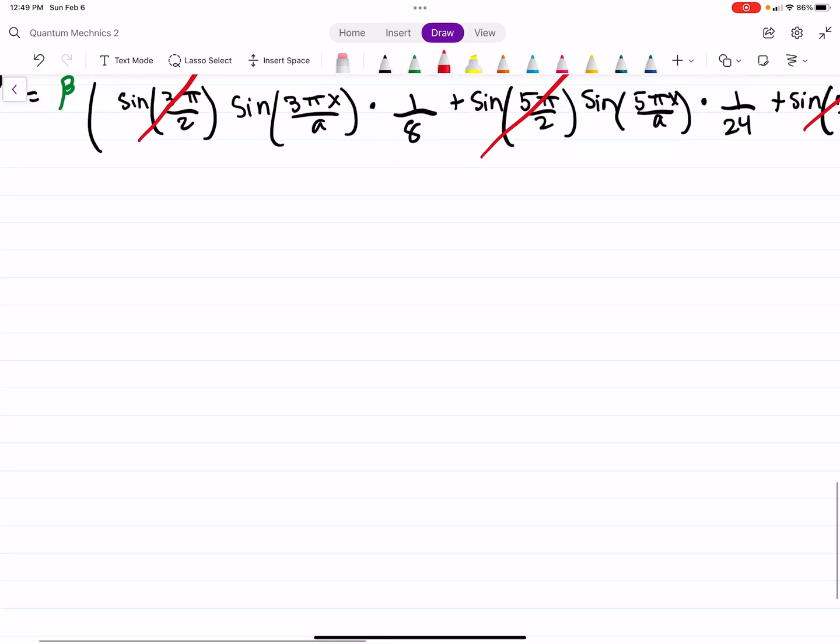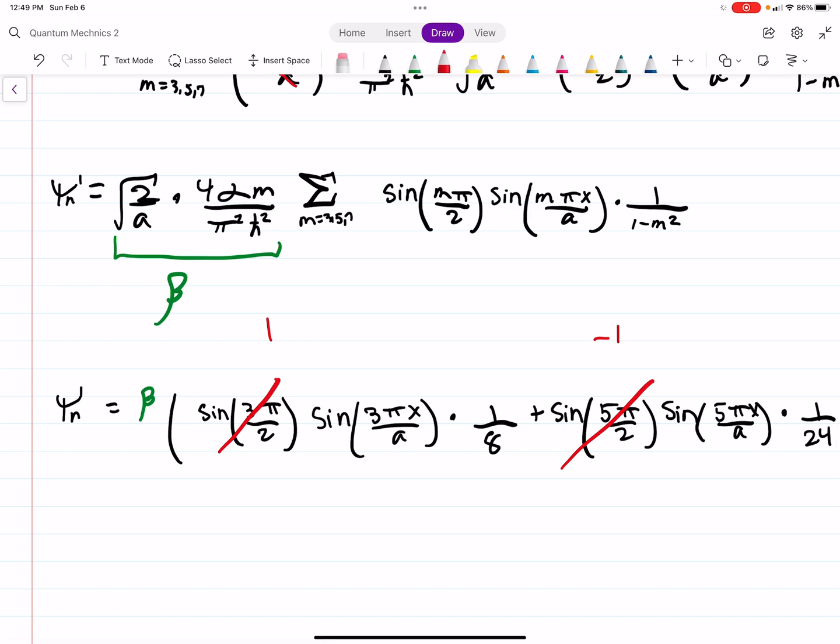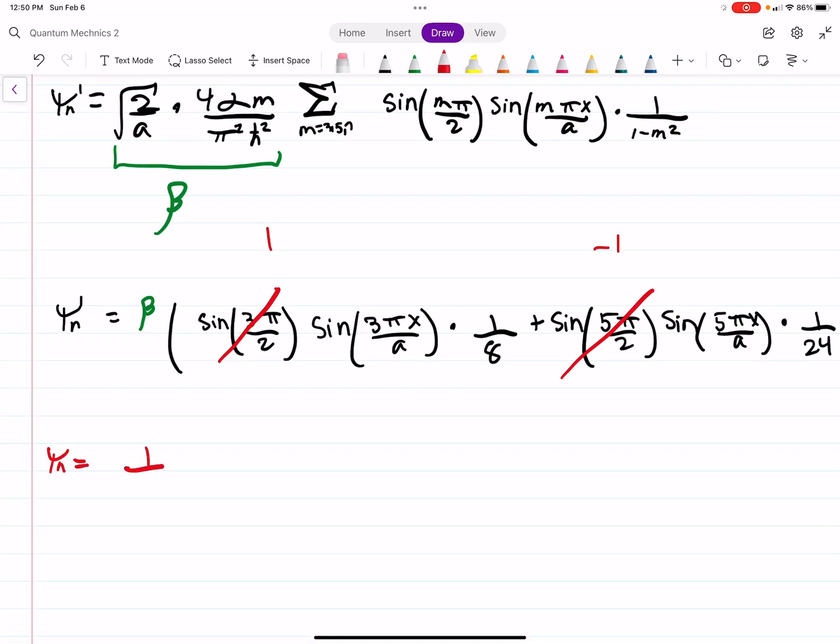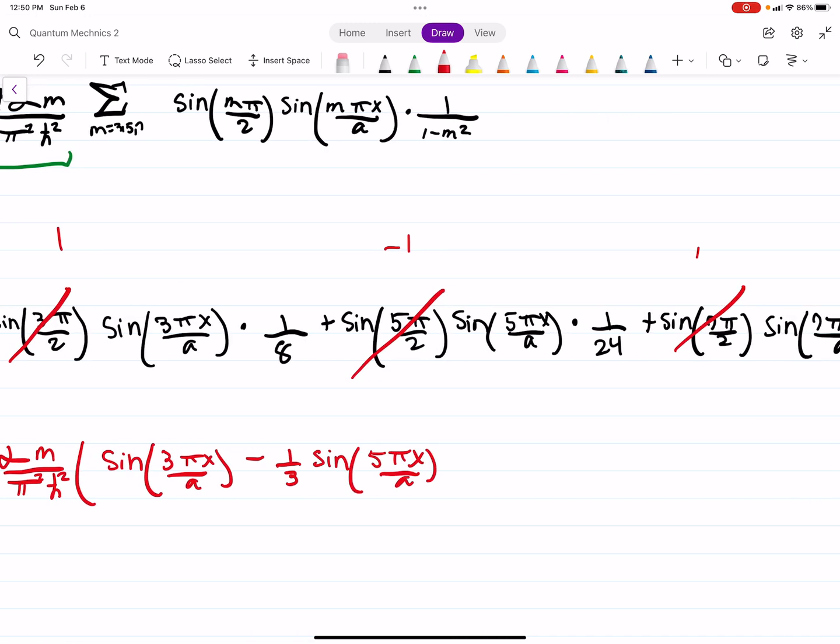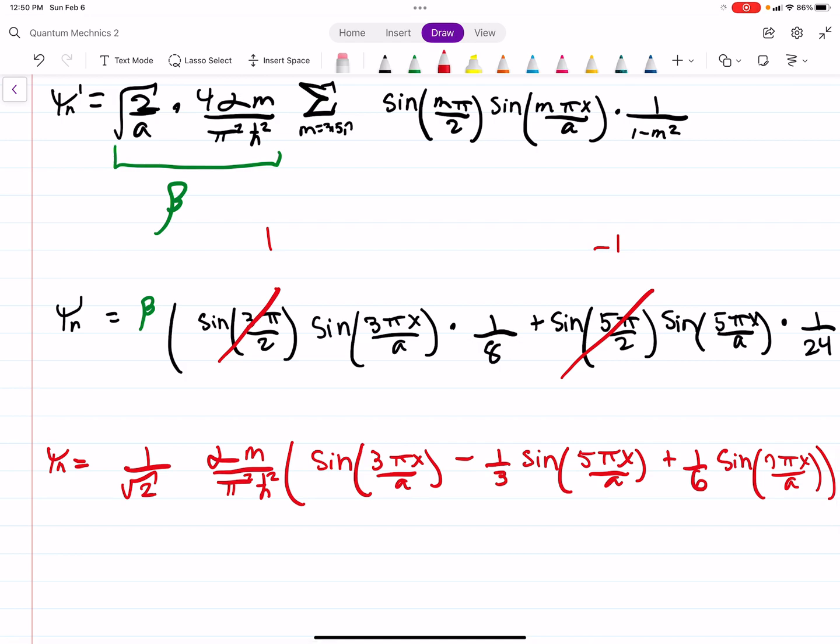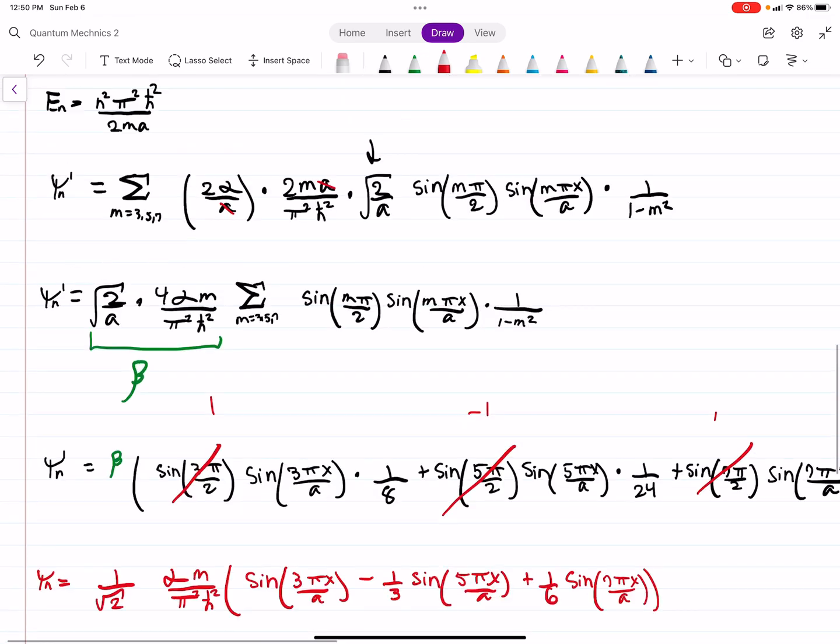And then we can factor out a 1 over 8. And if we look here, if we plug in a 1 over 8, you'll get 4 over 8, which is a half. Square root 2 over 2 is 1 over square root 2. So I'm going to plug in now for beta. It'll be 1 over the square root of 2, alpha M over pi squared h bar squared. And then you're just going to get sine of 3 pi x over A minus 1 third sine of 5 pi x over A plus 1 over 6 as we factored out the 1 over 8, sine of 7 pi x over A. And that's it. That's the correction to the wave function. So hopefully that makes sense. If it did, please give a like and subscribe.